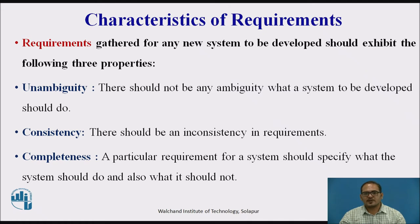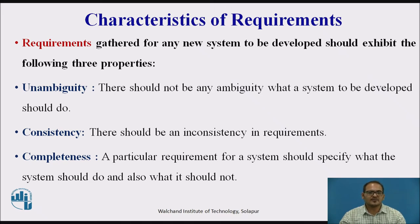Next is completeness. A particular requirement for a system should specify what the system should do and also what it should not. For example, consider a software to be developed for an ATM machine. If the customer enters an amount greater than the maximum permissible withdrawal amount, the ATM should display an error message and it should not dispense any cash. So there should be a complete requirement.